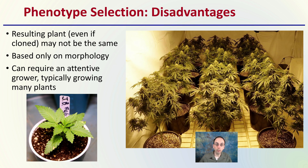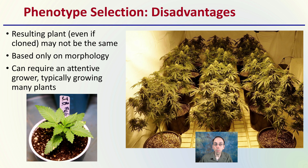However, the disadvantages of using phenotype selection are that resulting plants, even if cloned, may not be the same. It's based only on morphological characteristics. This also requires an attentive grower typically growing many plants — if a grower is only growing a small number of plants, that can make the process of phenotype selection more difficult.